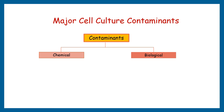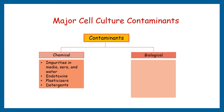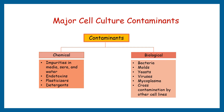Chemical contaminants include impurities in media, sera and water, endotoxins, plasticizers and detergents. Biological contaminants include bacteria, molds, yeast, viruses, mycoplasma, as well as cross-contamination by other cell lines. Bacteria, mold and yeast are easy to detect, whereas viruses, mycoplasma and cross-contamination are hard to detect. So now, first coming to bacteria.